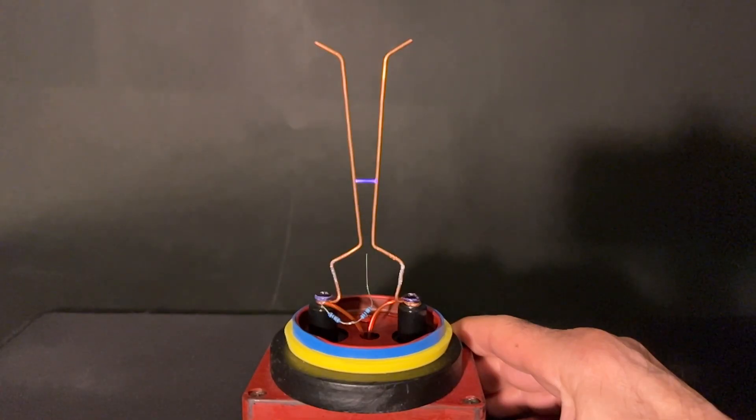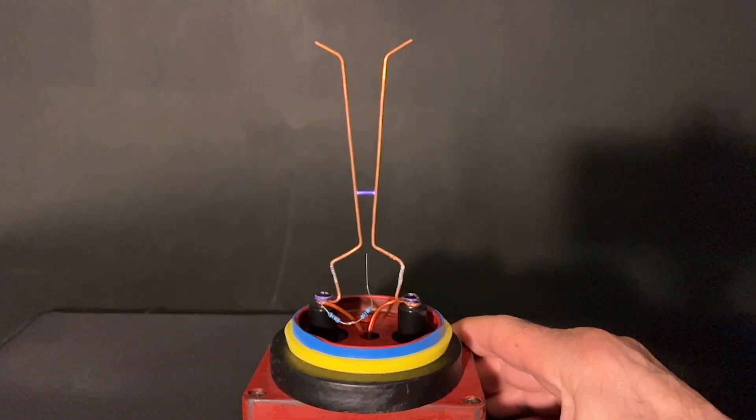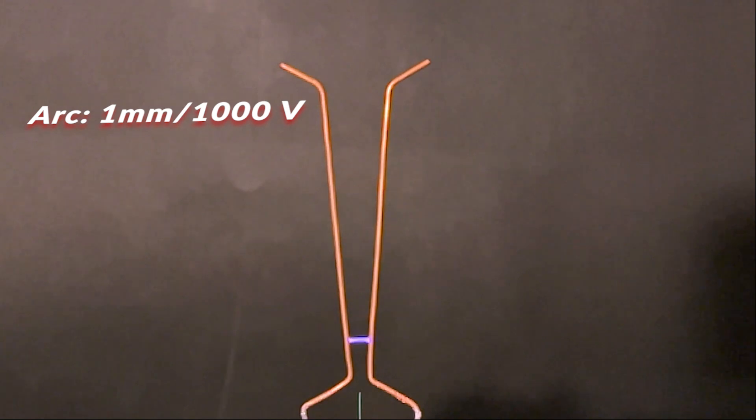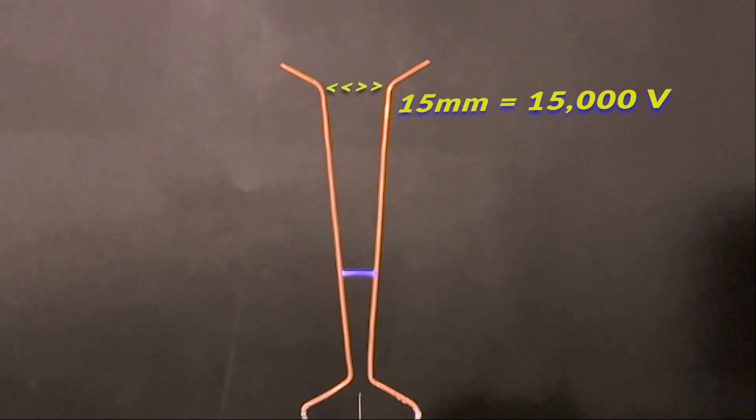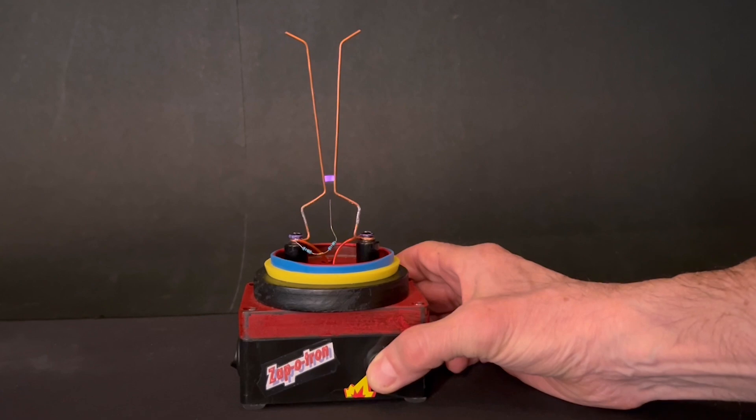The arc you see climbing up these two electrodes is hotter than the sun and could stop your heart with one touch. The science here is simple. If the voltage is high enough, it can ionize the air causing it to conduct and jump the gap. Its own heat makes it rise until the spark can't make it across the widening gap.